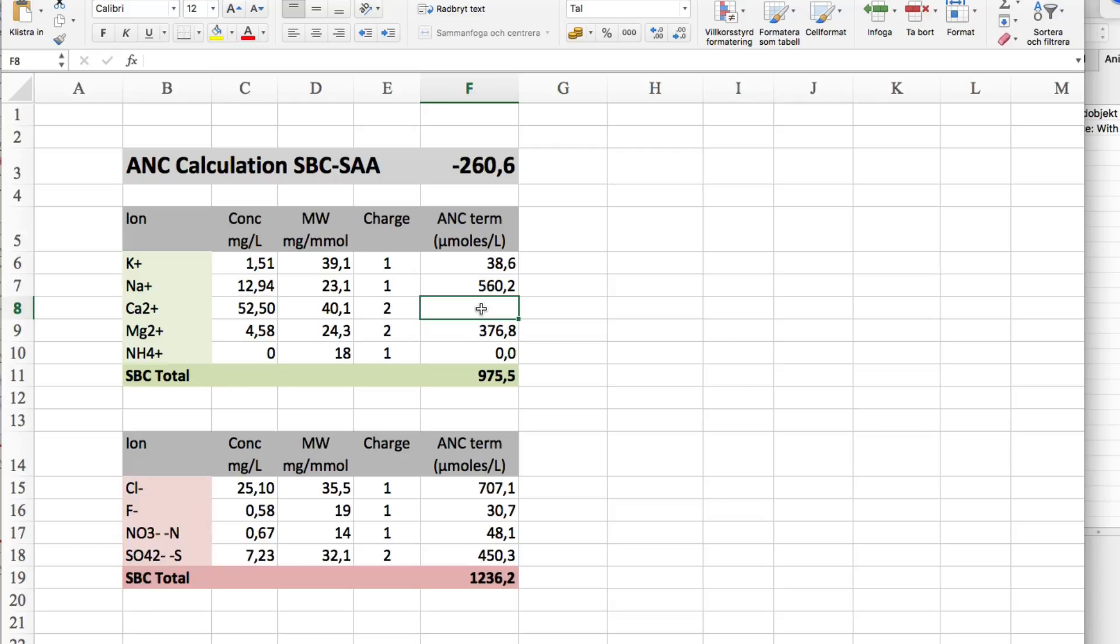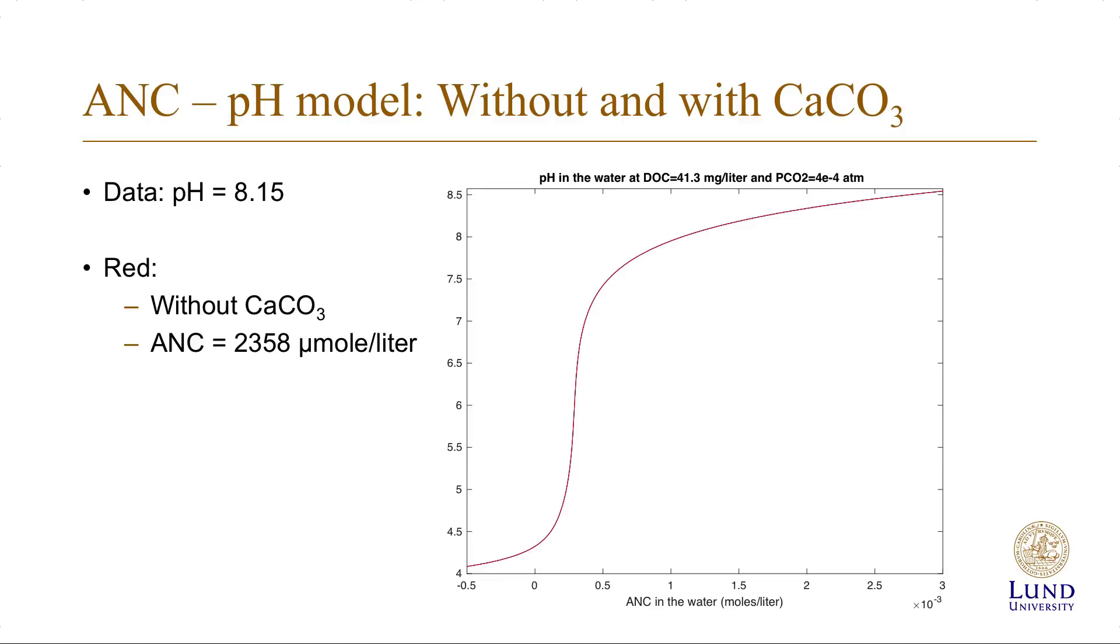So let's relate these ANC values to the model that we just developed. Here we are back to a relation between the pH and the ANC in the water. And here we have the curve where calcium is considered as a cation to a strong base, thus without any solid calcium carbonate in contact with the water. And the ANC was 2,358 micromoles per liter.